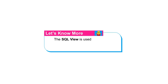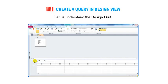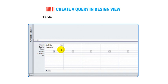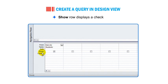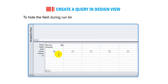The SQL view is used when a user wants to enter SQL statements to create or change a query. In the design grid: the Field row displays the selected fields from the table; the Table row displays the name of the existing table; the Show row displays a check mark — fields with check marks display information when the query is run. To hide a field during run time, uncheck the check mark by clicking on it.